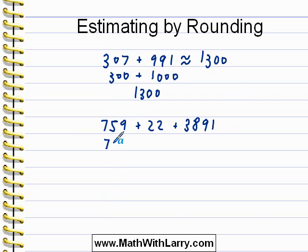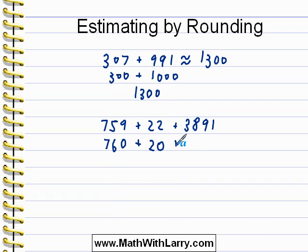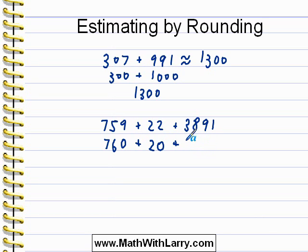In the case of 22, it's between 20 and 30 — I'm going to go ahead and make it 20. That will make our arithmetic easy and it's pretty close. Now in the case of the last number, we could choose to round to the nearest 100, which would make it 3,900. But I'm going to actually round to the nearest 1,000 because it's not that far from 4,000, so to make my job easier for adding later, I'll just round this up to 4,000.